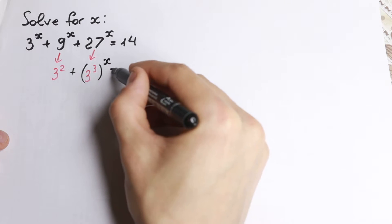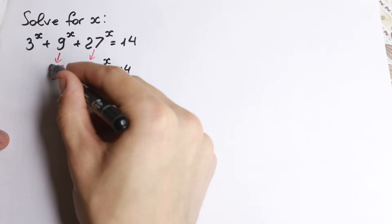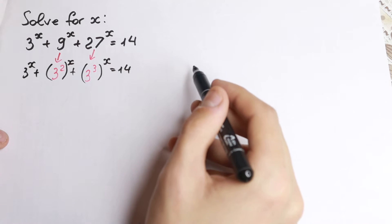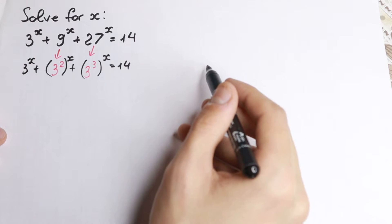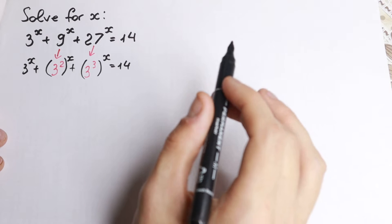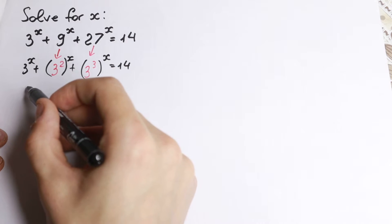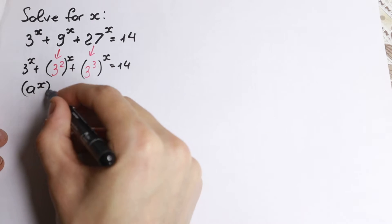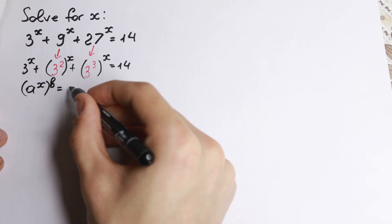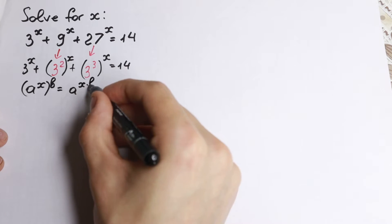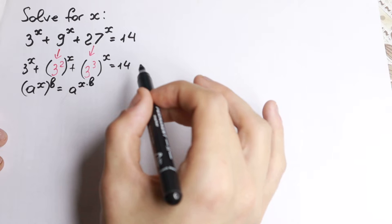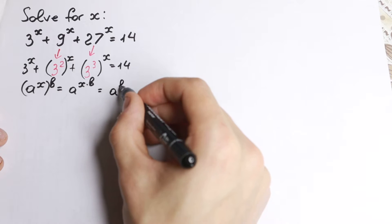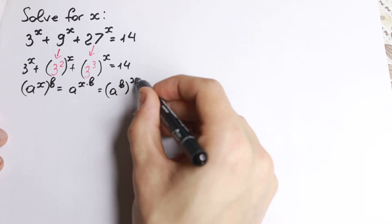So here we need 3 raised to the x equal to 14. We'll have everything raised to the power x and 3 to the x, still the same. Now we need to know a really good power rule, because if you know this rule, this question becomes really easy. The rule is: a to the power x, raised to the power b, we can write as a to the power x times b.